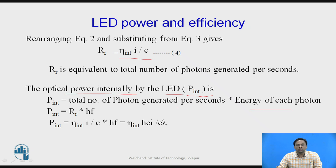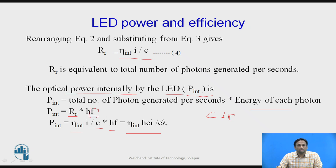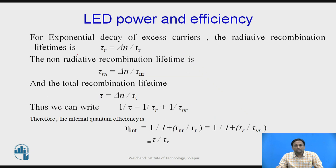The energy of each photon gives: P_int = R_r · hf = η_int · (i/e) · hf. This can be rearranged as: P_int = η_int · h · c · i / (e · λ), since f = c/λ. When solving problems, sometimes frequency is given and sometimes wavelength λ is given, so depending on that we calculate the total optical power internally generated.